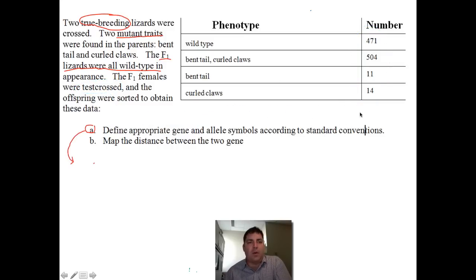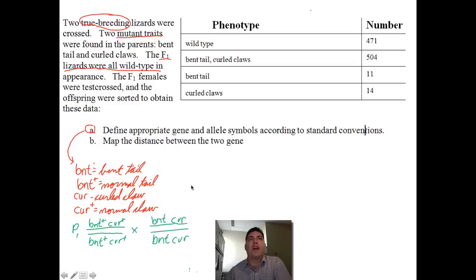So when we break down this problem, we should always put in gene symbols. And so I'm going to name the locus after the recessive condition. So bent tail and normal tail are indicated here. We're also going to deal with curled claw and normal claw. And I'm putting a plus sign by the wild type traits. Notice that there's a lowercase letter here that tells us that the mutant allele is recessive to the wild type.